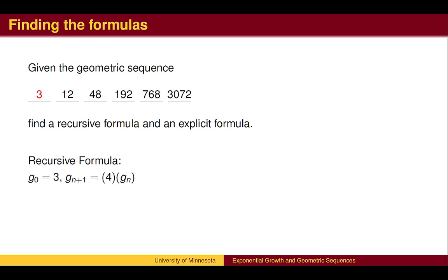To find the explicit formula, it is again helpful to find the value prior to the first term. If we divide once more by 4, we get g sub 0 equals 3. This allows us to have already performed one multiplication for the first term. The explicit formula will begin with 3, then count the number of times we multiply by 4 in the exponent. The explicit formula is g sub n equals the initial term of 3 times 4 to the nth power.